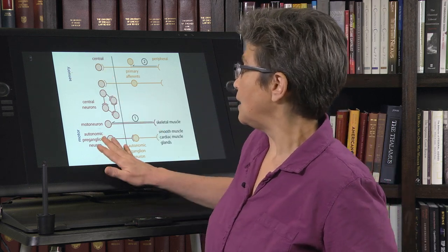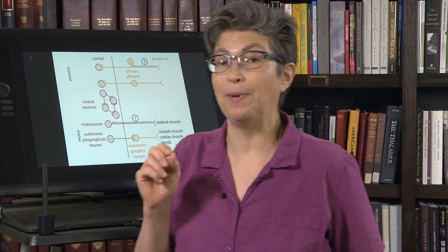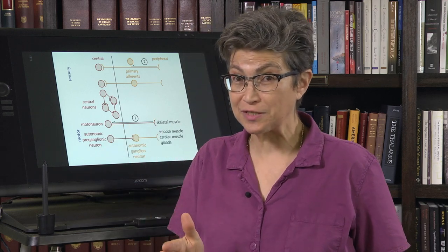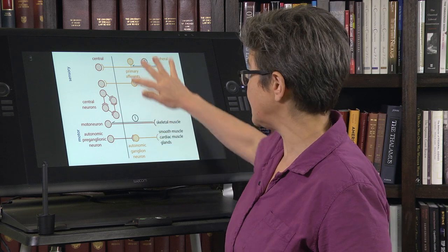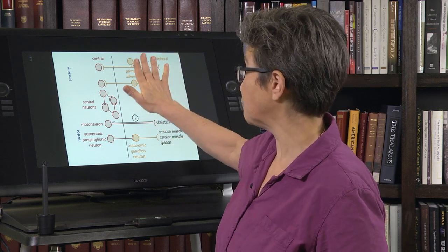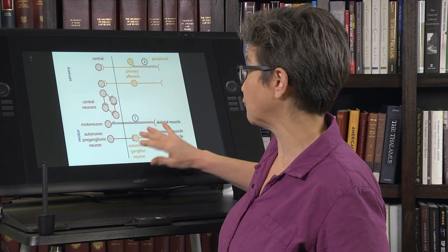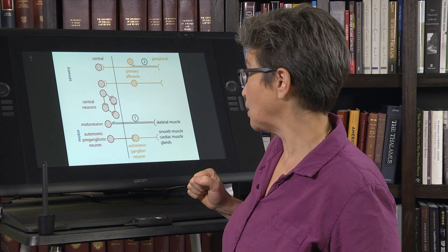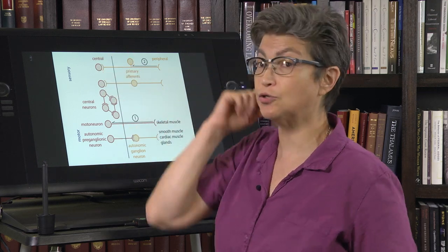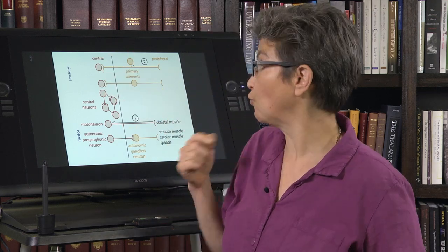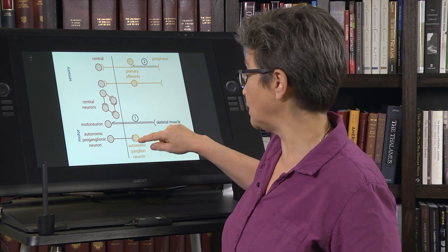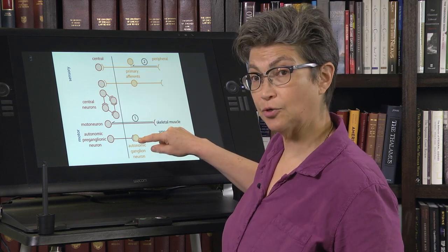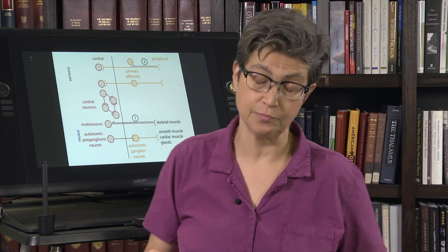Any neuron that has its cell body within the central nervous system is a central neuron. Any neuron that has its cell body in the periphery is a peripheral neuron. So all neurons are central except for sensory ganglion neurons, autonomic ganglion neurons, and enteric nervous system neurons.